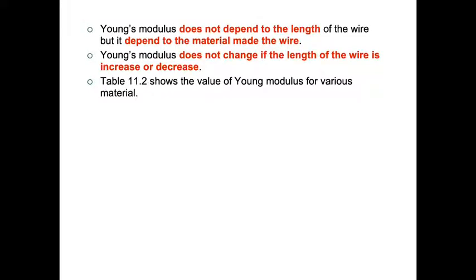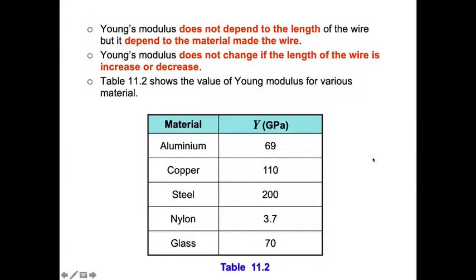Young's modulus does not depend on the length of the wire but it only depends on the material made the wire. It doesn't change if the length of the wire is increased or decreased. This is the example for the value of various materials' Young's modulus. We have aluminum, copper, steel, nylon, and glass. You don't have to memorize these. They will give you in the questions or they ask you to find it.